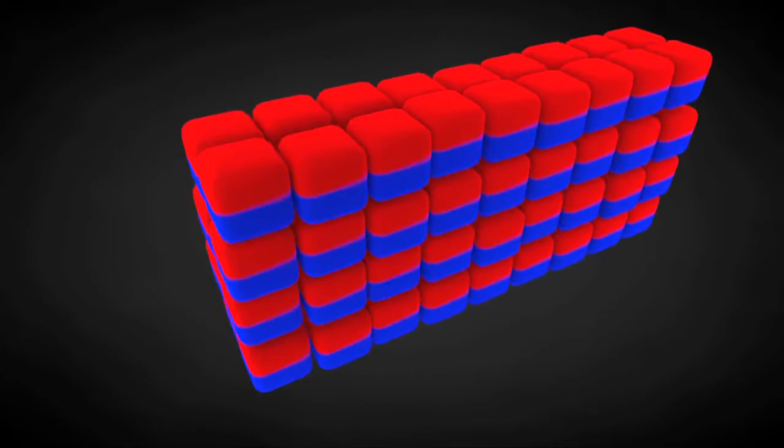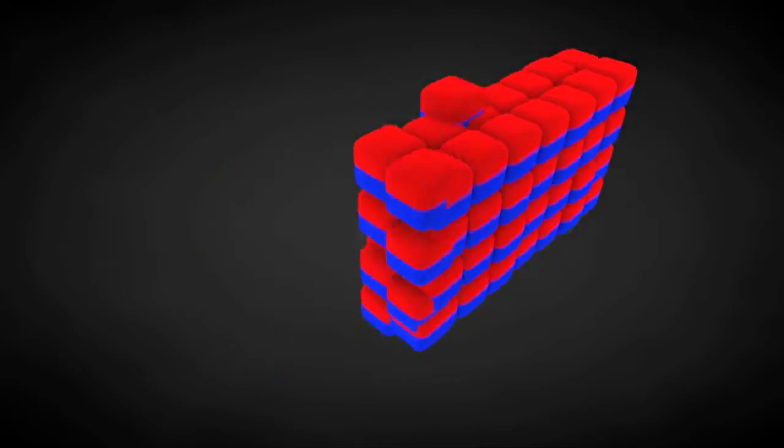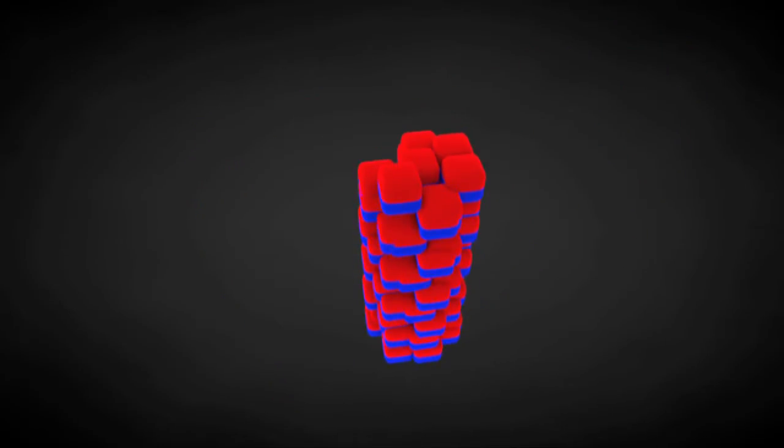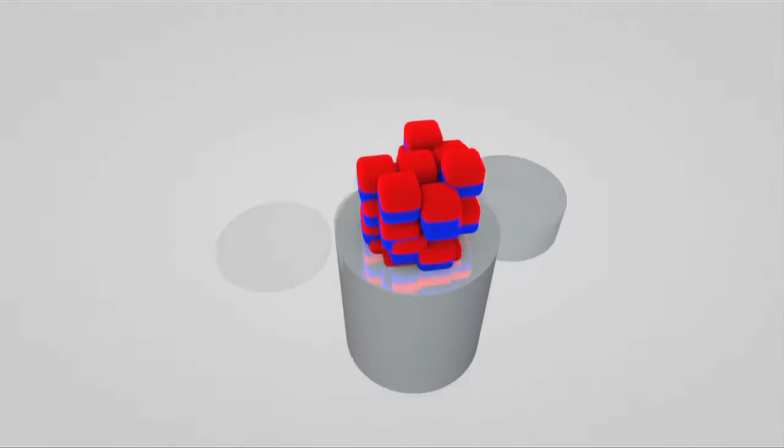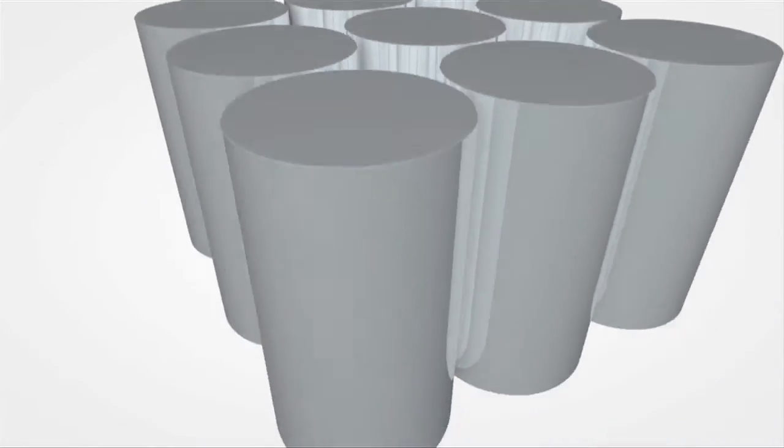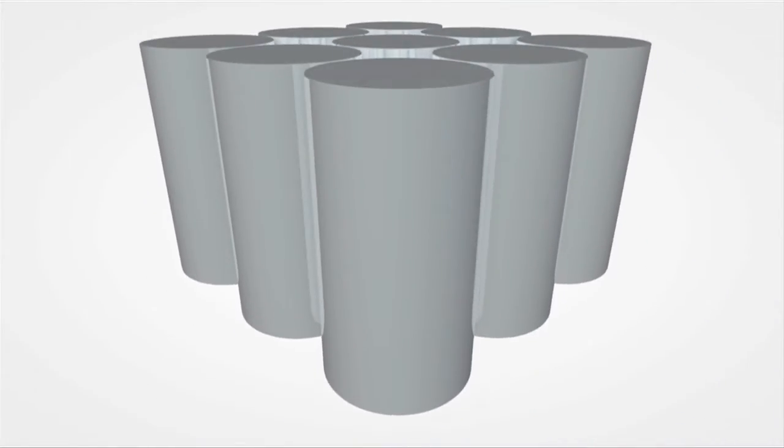This is done by replacing the flat magnetic regions with densely packed vertical cylinders on the disk. Each cylinder represents one bit. The goal is to increase their height while keeping their cross section as small as possible.